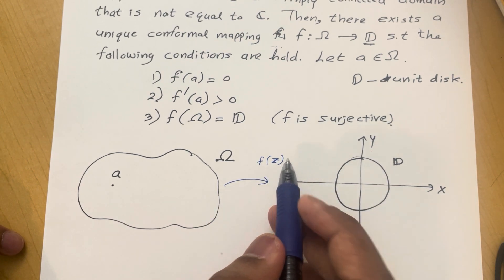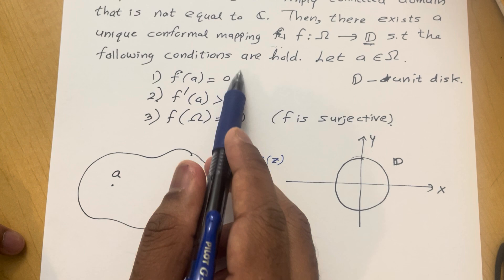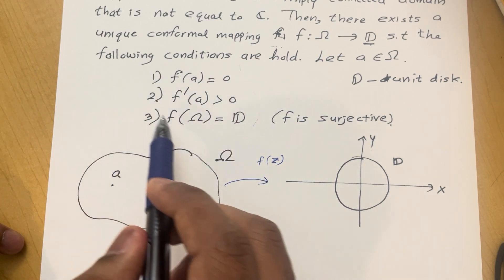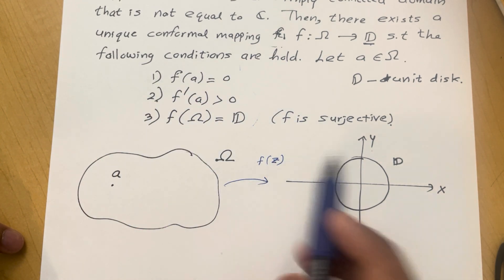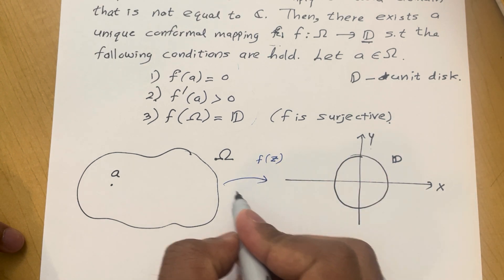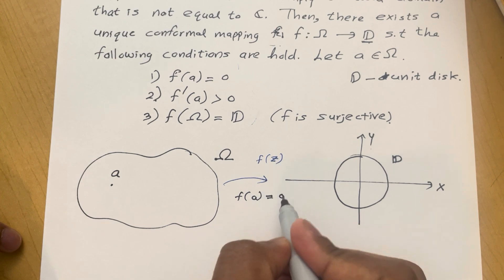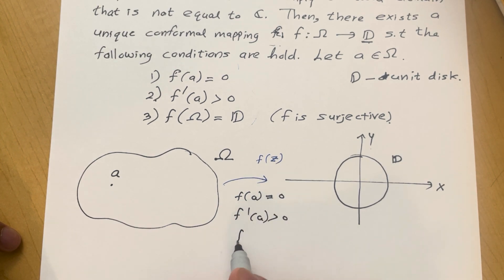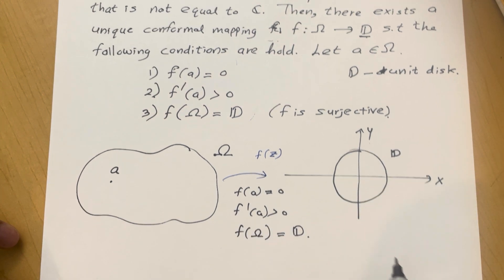But this f is not going to be unique if it is not satisfying these three conditions. This f is going to be unique if it satisfies conditions one, two and three. That means f(a) equals zero, f'(a) positive, and f(Ω) is equal to the unit disk.